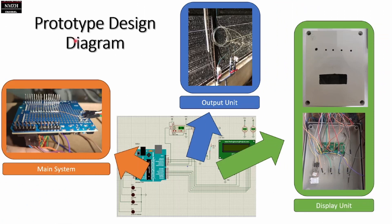To realize the automation system for gray oyster mushroom farming, we designed a system consisting of a main system, output units, and display units. We use Arduino to control everything inside the proposed project. We have several valves to control and spray water accordingly based on sensor readings. We also have a display unit to indicate the current or demand condition based on three LEDs.